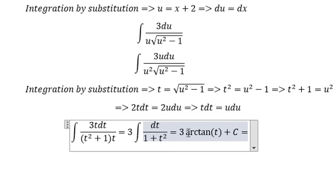So we have 3 arctan t, and t is the square root of u squared minus 1.